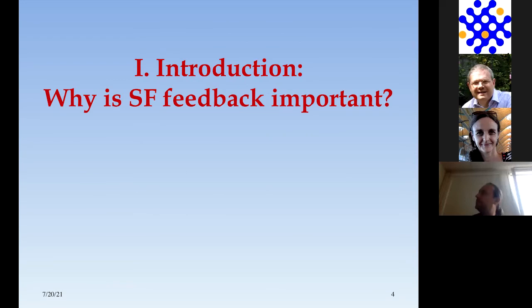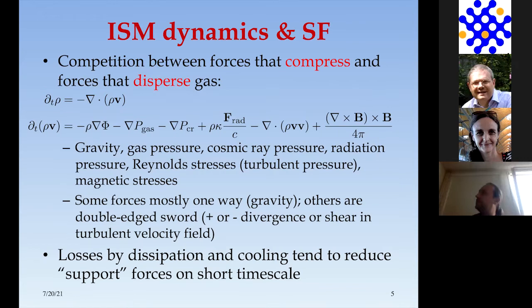Let me start with why feedback is important. I've written down two equations—only two out of four of the simplest set—but I think they convey something quite important. The first equation says how does density change: density changes due to a positive or negative divergence of density times velocity. Then, how does the density times velocity change? That's determining whether there's a compression or a rarefaction. Gravity affects this, as do gas pressure gradients.